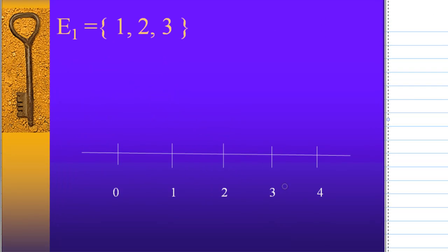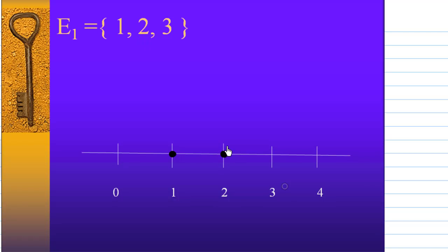Let's look at the first set. E1 consists of 1, 2, 3. We can use a number line to visualize the set. I am going to indicate the elements of E1 on the number line. The first point is 1, so I indicate 1 on the number line. Then the second point is 2, and the third point of E1 is 3. I indicate 3 on the number line — three points on the number line.